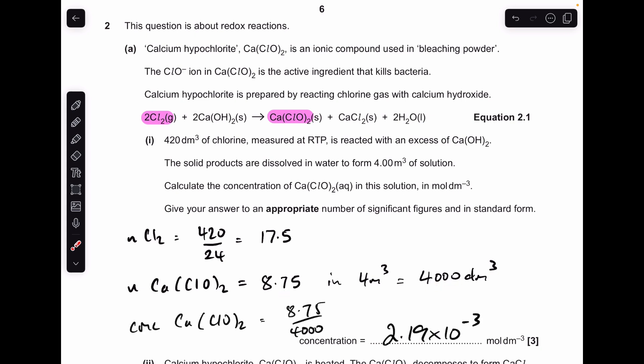So the concentration is the moles divided by the volume in decimeters cubed. That's coming out at a concentration of 2.19 times 10 to the minus 3 moles per decimeter cubed. They wanted it in standard form and appropriate number of significant figures is based on the lowest number in the data, so 3 is appropriate here.